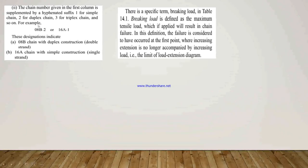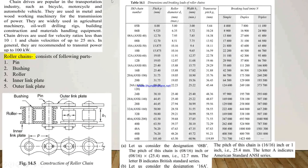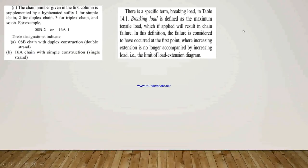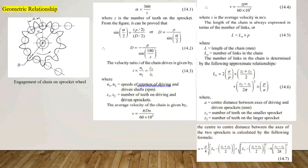The chain number in the first column is supplemented by a hyphenated suffix: 1 for simple chain, 2 for duplex chain, and 3 for triple chain — for example, 08B2 means an 08B chain with duplex construction, and 16A1 means a 16A chain with simple single-strand construction. The breaking load defined in table 14.1 is the maximum tensile load which, if applied, will result in chain failure — that is, the limit of the load-extension diagram.